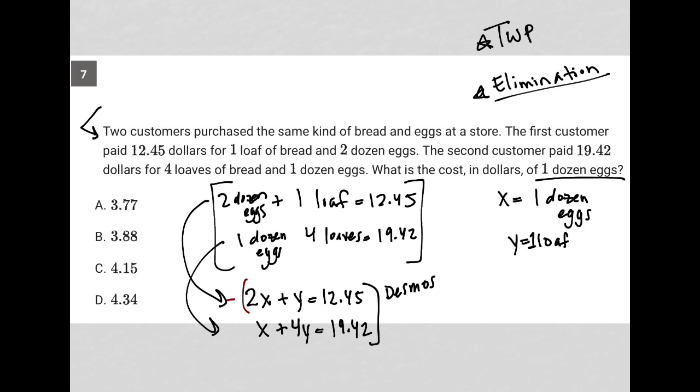Which means I multiply this first equation by negative 4 so that I have negative 8X minus 4Y equals... Let's go to my calculator and see what 12.45 times negative 4 is. It's negative 49.8. The second equation will stay the same at X plus 4Y equals 19.42.